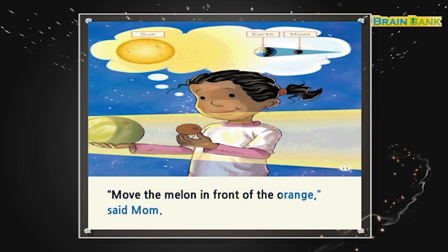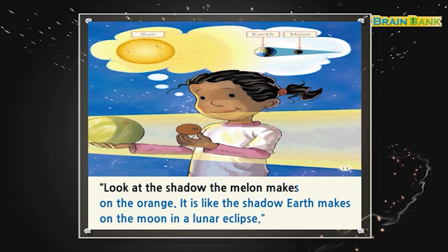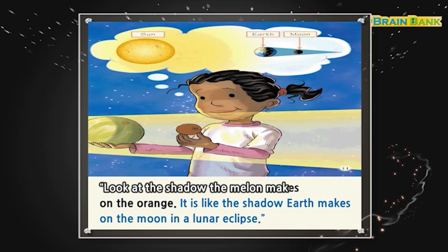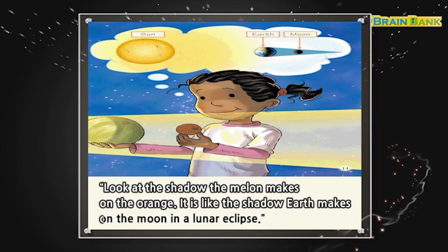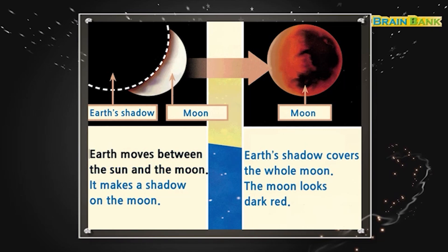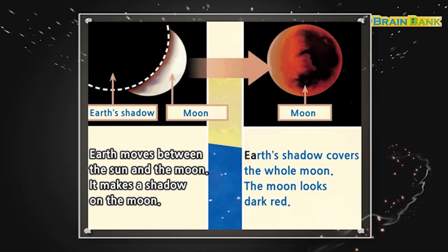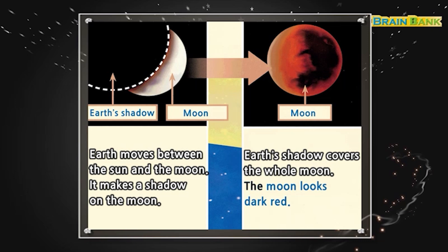Move the melon in front of the orange, said Mom. Look at the shadow the melon makes on the orange. It is like the shadow Earth makes on the moon in a lunar eclipse. Earth moves between the sun and the moon. It makes a shadow on the moon. Earth's shadow covers the whole moon. The moon looks dark red.